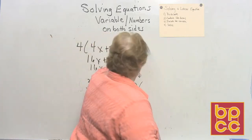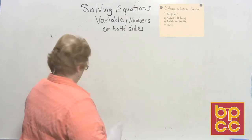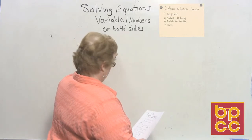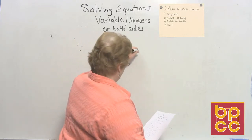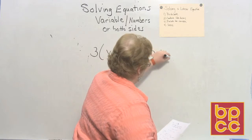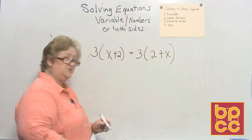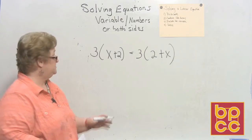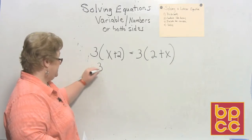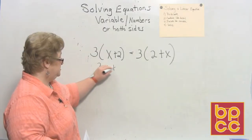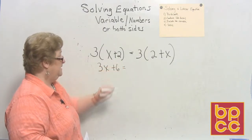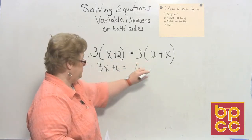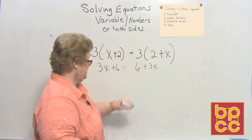Okay, here comes your first one. Very first one is going to be 3 times x plus 2 equal 3 times 2 plus x. All right, let's distribute first, and then we'll start moving x's, the variable, and then move the numbers. 3 times x is 3x. 3 times a positive 2 is a plus 6. On the other side, 3 times 2 is 6, and 3 times a positive 1x is a plus 3x.